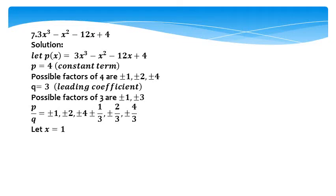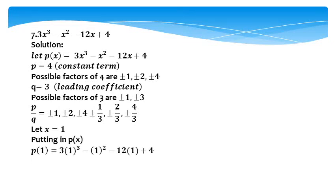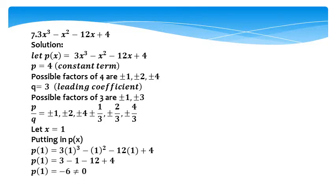Now, putting x equal to 1 in the given polynomial: p(1) equals 3(1)³ minus (1)² minus 12 times 1 plus 4, which equals 3 minus 1 minus 12 plus 4. So p(1) equals minus 6, which is not equal to 0. Hence, x equals 1 is not a zero of p(x).